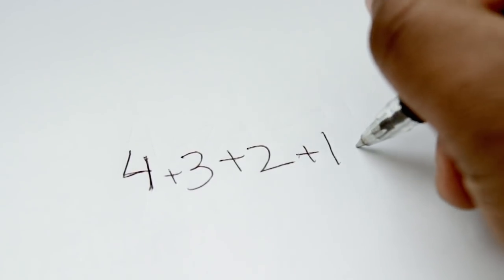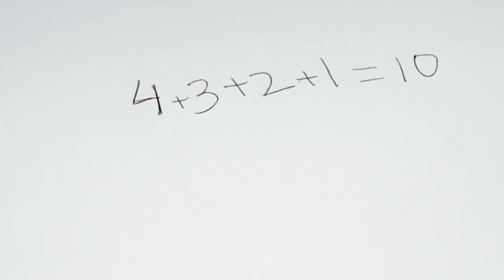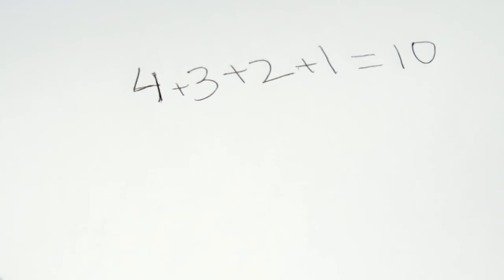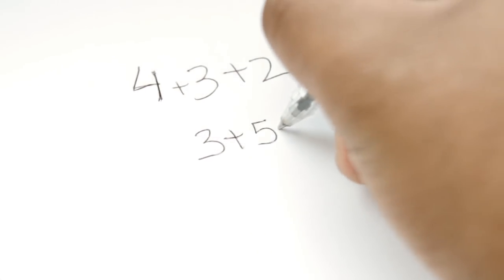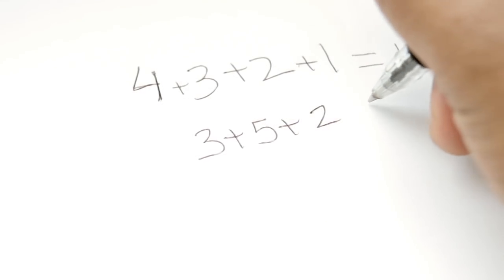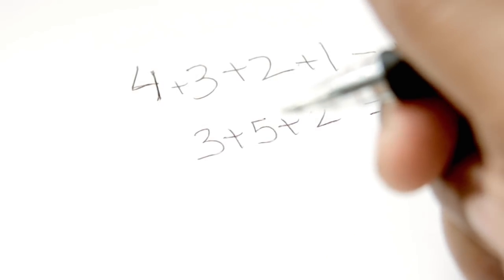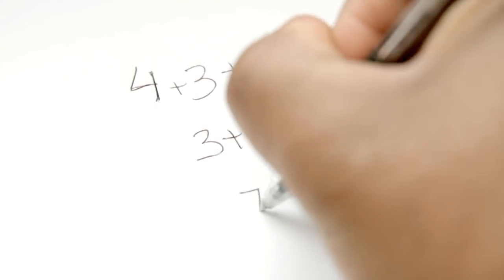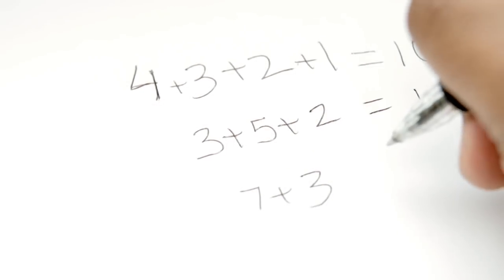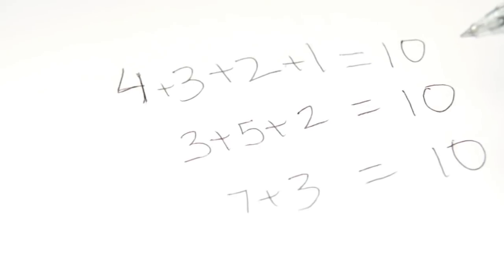All right, so we'll say that equals 10. All right, so then we'll take the series of numbers: three plus five plus two. We'll take that, we'll say that equals 10, right? All right, then we could take something like the series of numbers seven plus three. That equals 10.